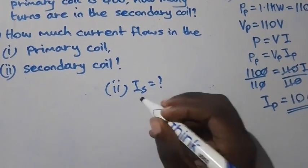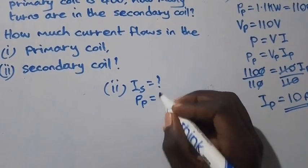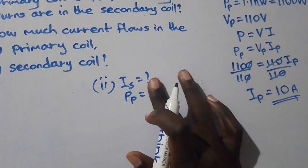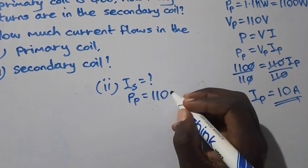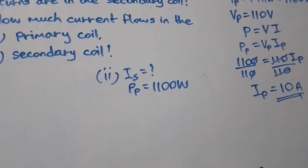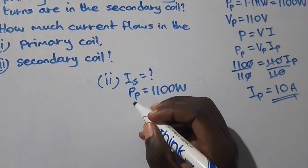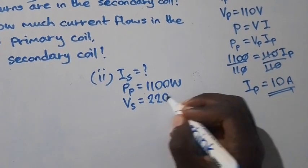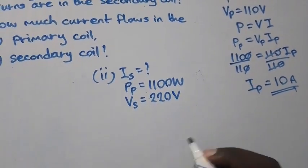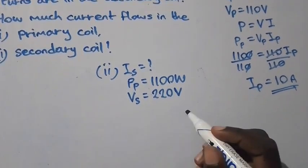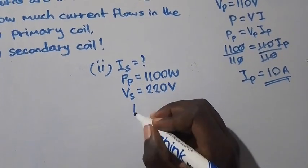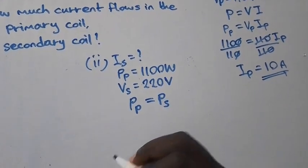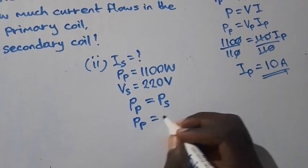So now to find IS, we have PP which is equal to 1100 watts, and we have VS which is equal to 220 volts. So we can apply this formula: power passing through the primary coil equals power passing through the secondary coil. So PP equals PS, same as VP times IS.